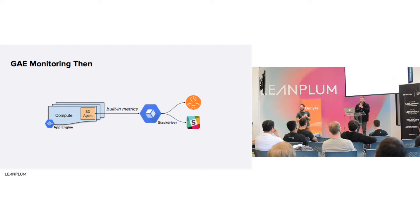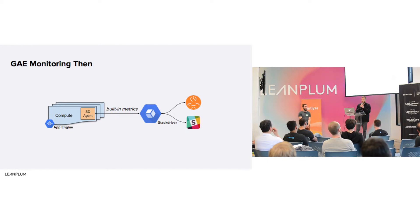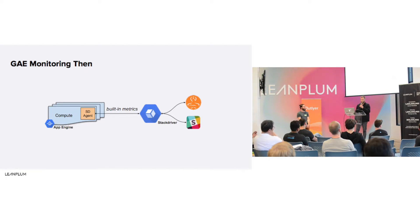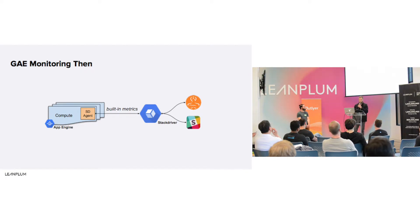We have about 20,000 Google App Engine instances running Python and Java right now — we're phasing out Python, so pretty much everything is focused on Java. There's a managed monitoring and alerting system in Google Cloud called Stackdriver. It already collects a lot of monitoring information — simple stuff like QPS — and you can easily alert on those built-in metrics. We just hook those up to Slack and OpsGenie for notification. It's free and really easy to use, but it's insufficient for our purposes.